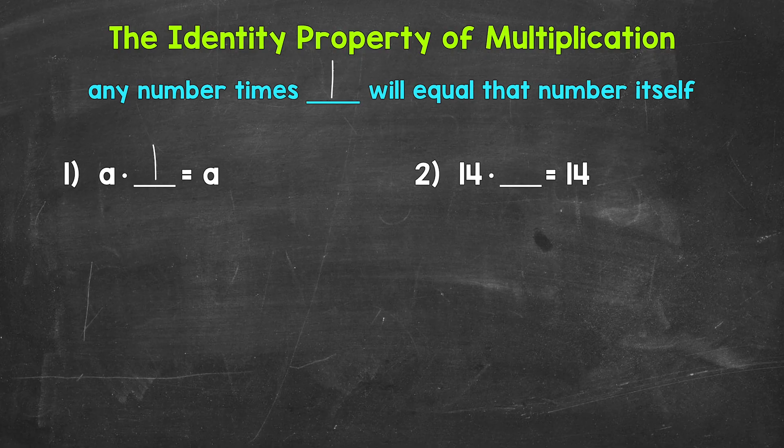Let's move on to number two, where we have 14 times what equals 14. So again, how do we get this number to equal itself? Well, 14 times one equals 14. And that's the identity property of multiplication.